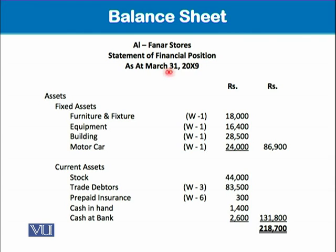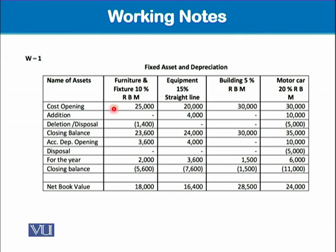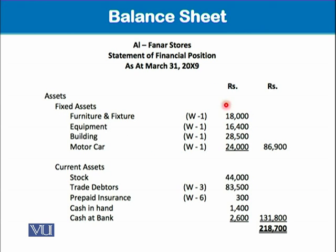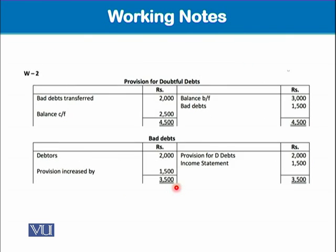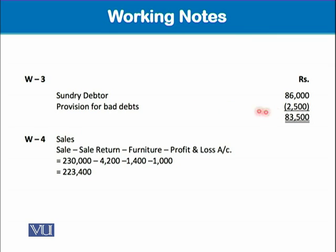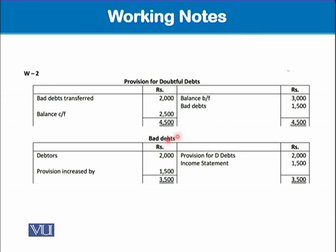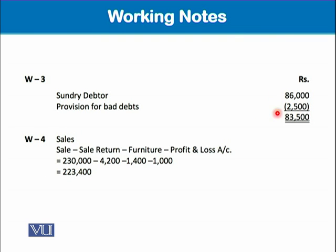Now for the balance sheet of Alpha Nart Stores, also known as the statement of financial position, as at 31st March 2009. Place the currency unit at the top of the columns. Fixed assets — furniture and fixtures, equipment, building, and motor vehicle — are taken as net book values from Working 1, which we discussed in an earlier module. For current assets, closing stock is listed first. For debtors, Working 3 shows: sundry debtors minus the carry-forward provision for doubtful debts balance.